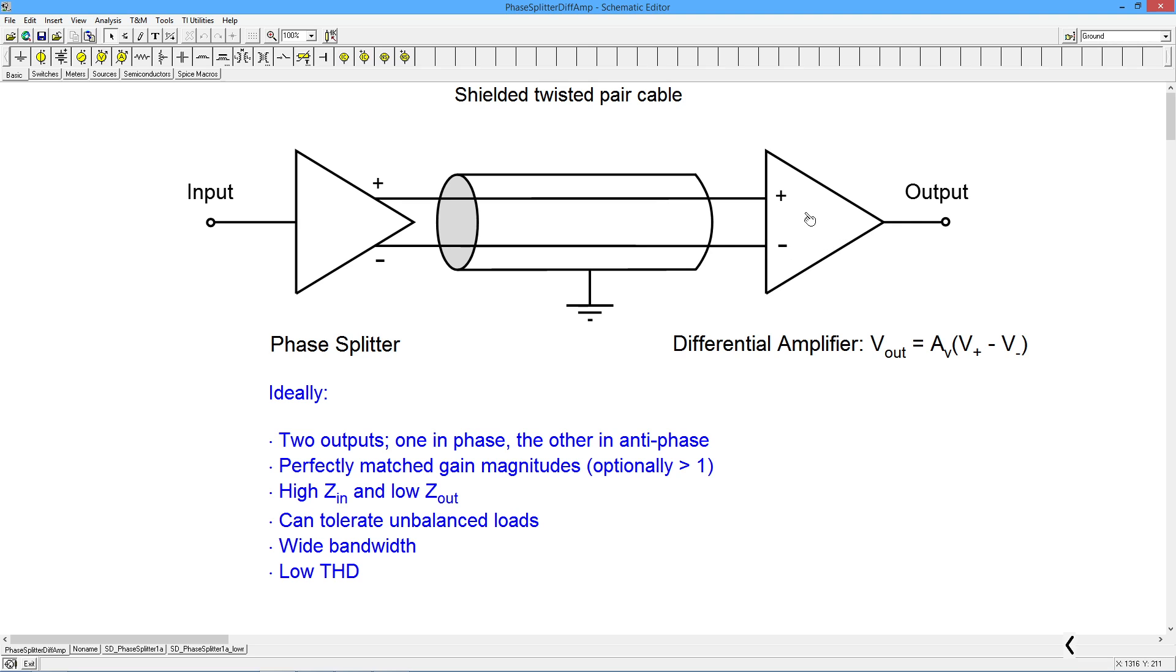In other words, the two conductors here are twisted around each other and there is a coax shield around the whole thing. This then feeds into a differential amplifier, which is sort of the inverse, the complement of the phase splitter. What this does is it takes the difference of the input. Its output is its gain times